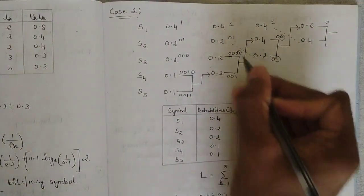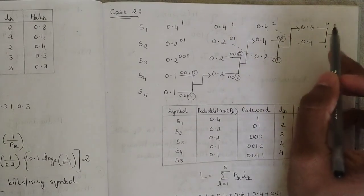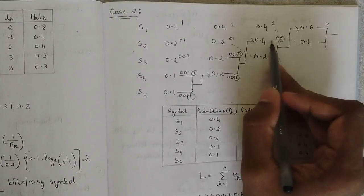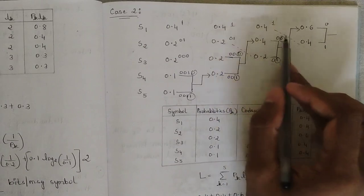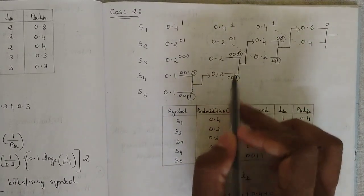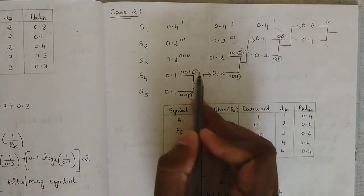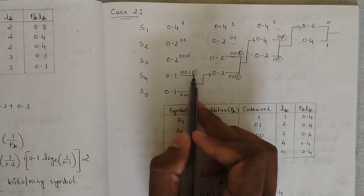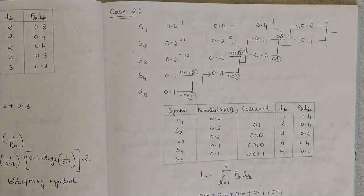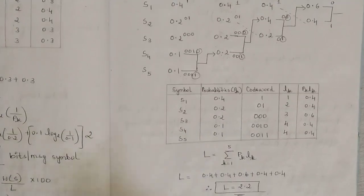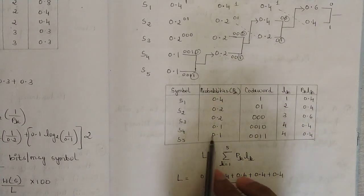The codeword is added on the prefix side, giving 0001. The codeword 00 is prefixed to produce 000 and 001 as new codewords, with previous codewords kept as is. The 0.2 entry with codeword 001 is prefixed to those two values, giving new codewords 0010 and 0011, while 0001 and 1 are kept as is. So the full codeword list is: 0.4 → 1, 0.2 → 01, 0.2 → 000, 0.1 → 0010, 0.1 → 0011.